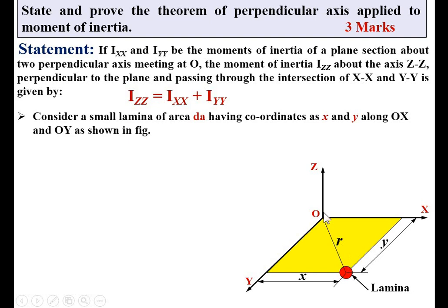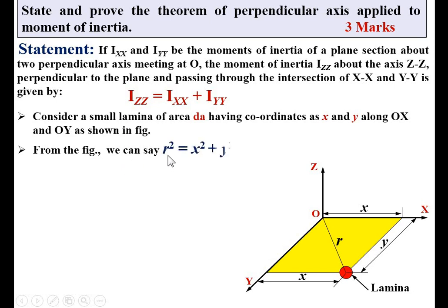Let r be the distance of this lamina from the ZZ axis. This horizontal distance is x and this vertical distance is y, and keep in mind that the angle between OX and OY is 90 degrees. With the help of this geometry you can say x² + y² = r², according to Pythagoras' law. So from the figure, r² = x² + y². Let this be equation number one.